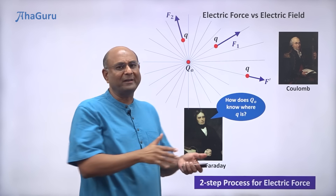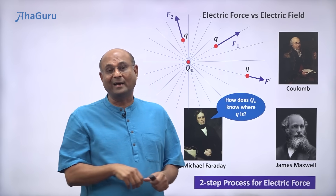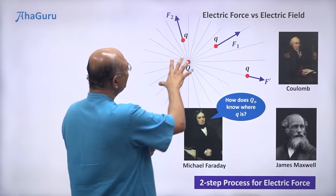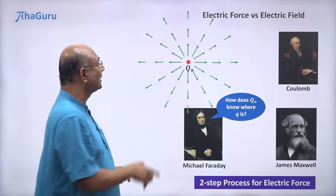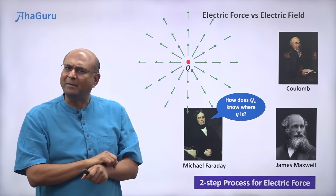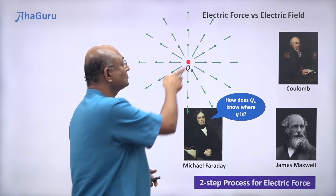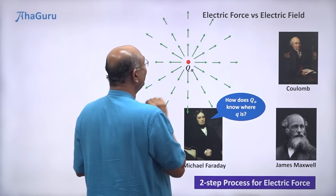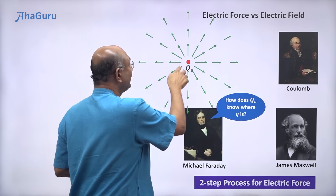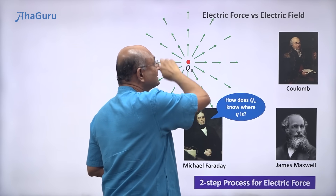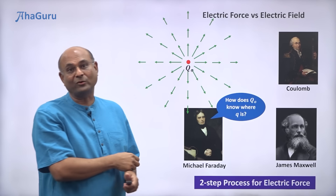Now, these lines are not a very mathematical idea — you cannot use them to put numbers in. So James Clerk Maxwell took Faraday's idea and modified it slightly. He said lines are not mathematical; let us make it arrows. So Q naught does not put lines — Q naught puts arrows. How are arrows mathematical? Because arrows are vectors, and you know that you can say 3i plus 4j plus 9k. So you can actually use mathematics to talk about arrows. What Maxwell did was to take Faraday's idea and, instead of saying Q naught puts lines in space, he said Q naught puts arrows in space. These are the arrows that we call electric field.